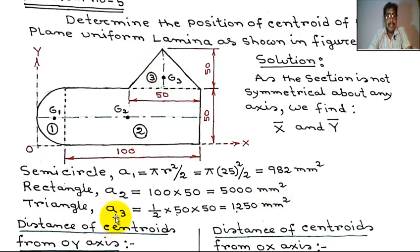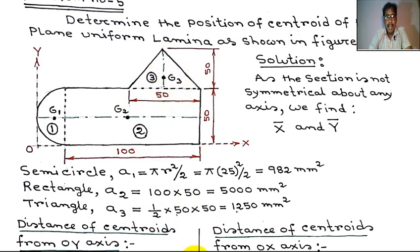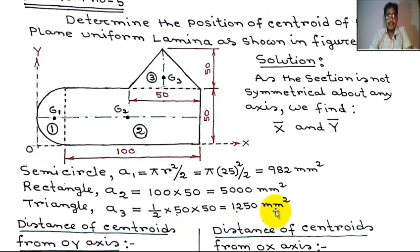A3 is the area of the triangle. A3 equals half times base times height. Base equals 50 mm and height equals 50 mm. So A3 equals half times 50 times 50, which equals 1250 mm².